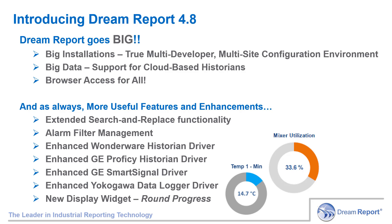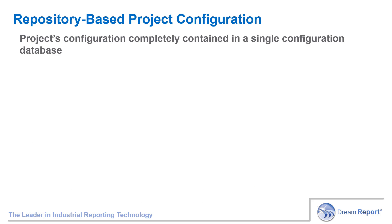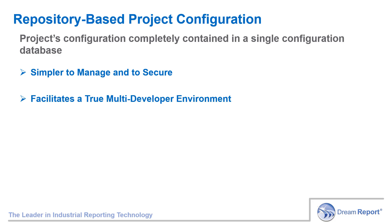So let's take a look at the major architectural change to DreamReport 4.8. With this release, the entire project configuration is now contained in a single configuration database, as opposed to a set of multiple configuration files and folders. The immediate benefits of this change are that it's simpler to manage, backup, and secure your projects. But an even bigger benefit is that with a configuration database or project repository, it facilitates a true multi-developer environment.